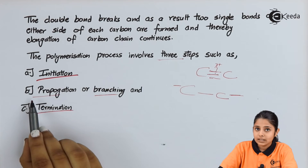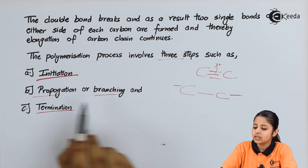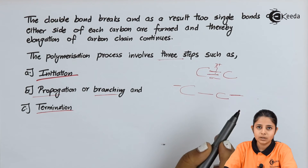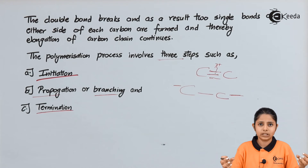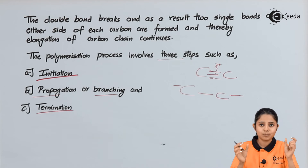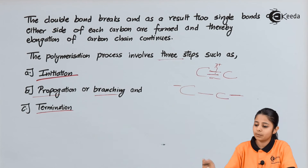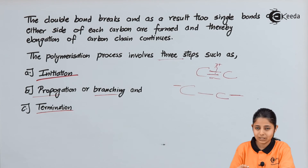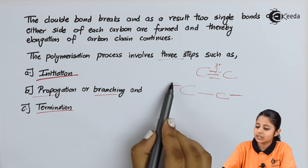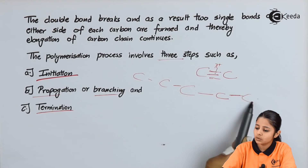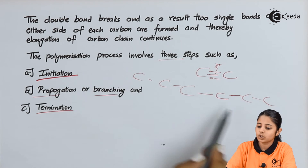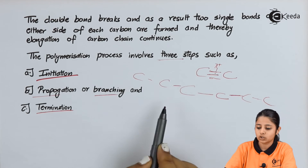The second step is the propagation step, also known as the branching step. Once the process is initialized, we have to propagate it and make a chain out of it. Many such double bonds will be broken into single bonds and many such units will be attached to each other — this is known as the propagation or branching step.